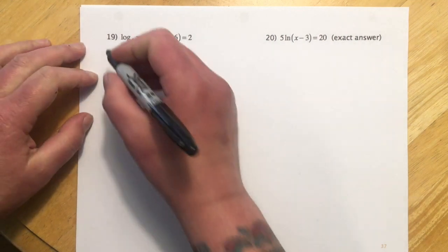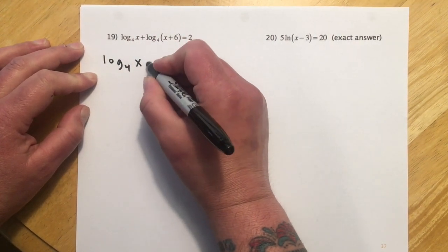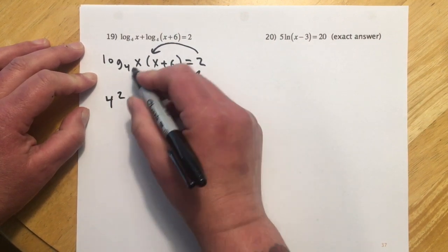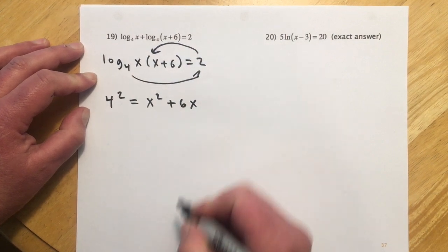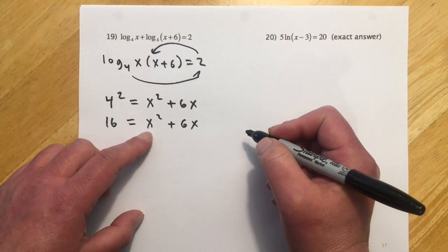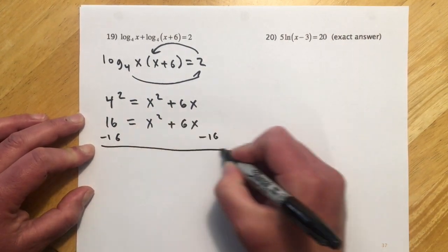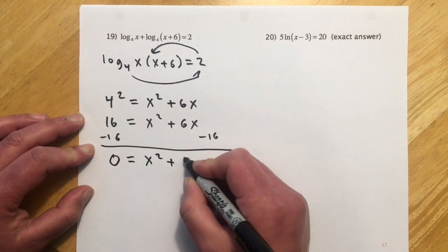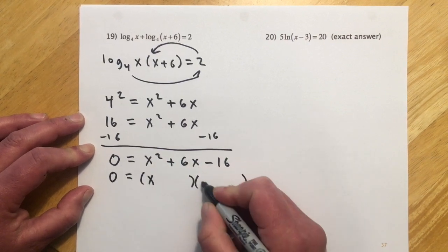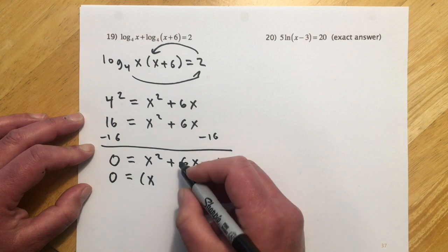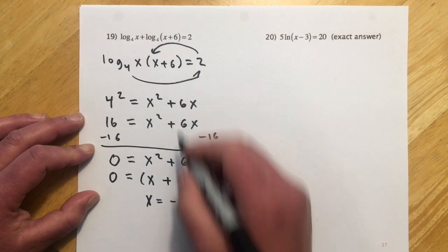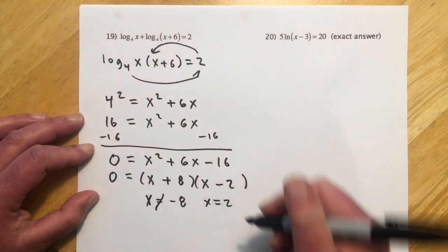Number 19 involves addition, so write it as multiplication. Change to exponential form: 4 squared equals x times (x+6), which is x squared plus 6x. So 16 = x² + 6x. This is quadratic, so set it to 0: 0 = x² + 6x − 16. Factor: (x+8)(x−2), giving possible solutions x = −8 and x = 2. Negative 8 can't work because it's negative, but x = 2 keeps both arguments positive, so x = 2 is our solution.